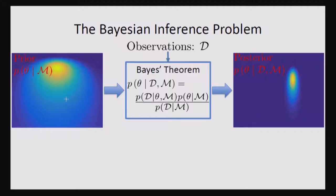So the Bayesian inference problem on the surface seems like a fairly easy problem to solve. You have some prior distribution that represents your current understanding of the system. And then given new observations, we want to use Bayes' theorem to calculate the posterior distribution.